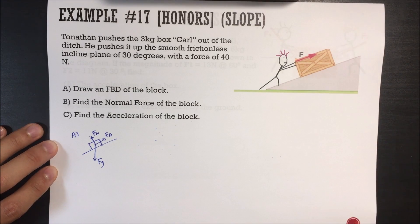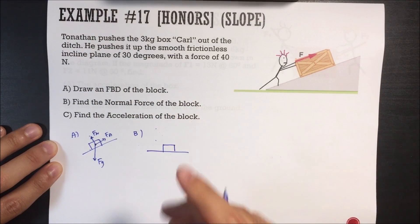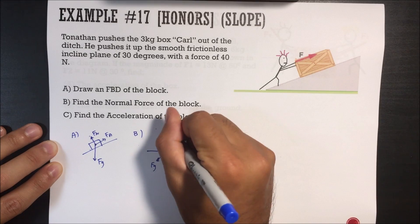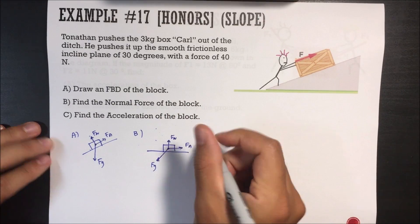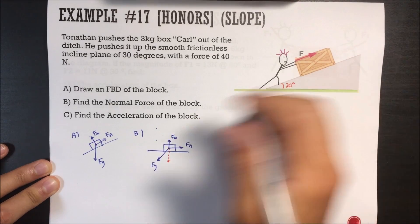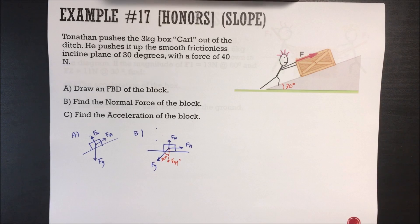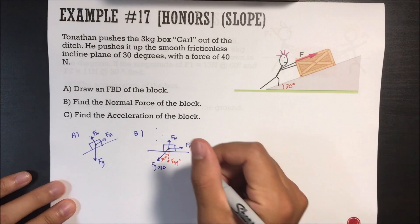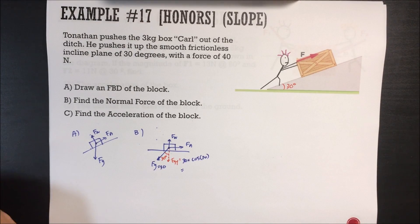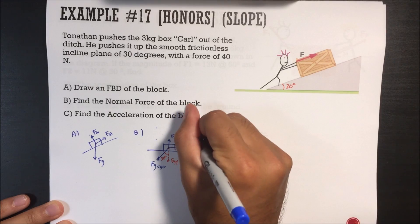Find the normal force on the block. Same thing — I'm going to draw this on a flat surface by tilting everything. The force of gravity looks like this because it's tilted, the normal force is straight up perpendicular, and the force applied goes up like this. This is 30 degrees, so over here is also 30 degrees. The force of gravity in the y direction equals the normal force. Force of gravity is 30, so force of gravity in y equals 30 times cosine of 30, which gives us 25.98 newtons, so the normal force is 25.98 newtons.